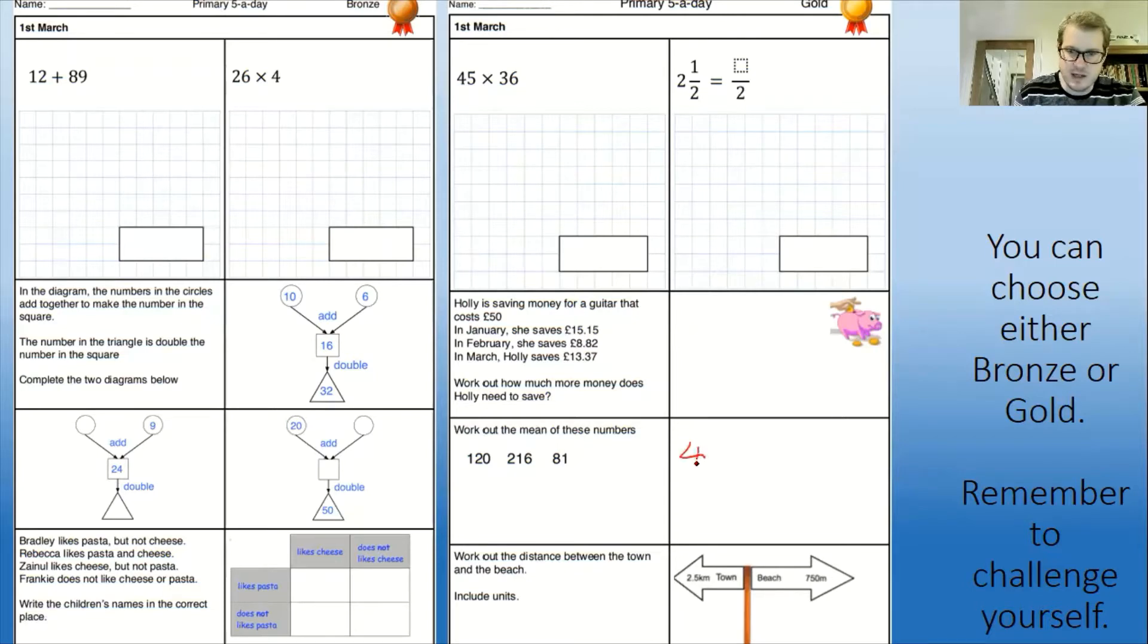For example, if you had these numbers, to work out the mean of those numbers we'd need to add them together. So five add four is nine, add two more is eleven, and then we'd have to divide by three to get our answer. So in that respect it would be a decimal answer. It may be a decimal or a whole number.